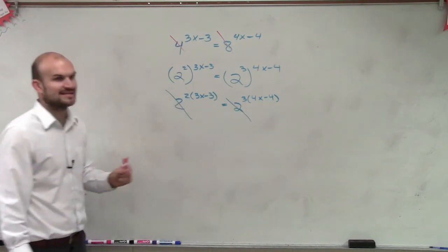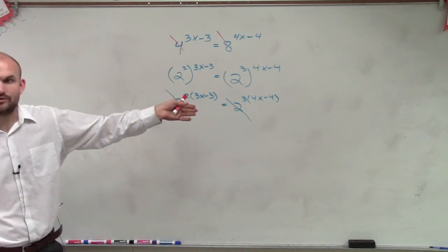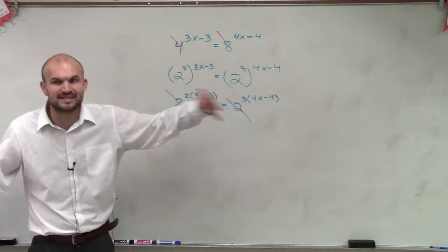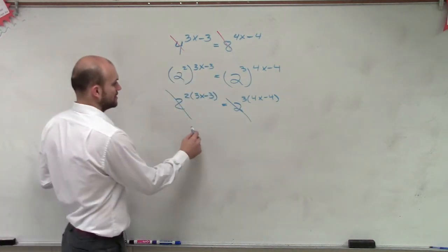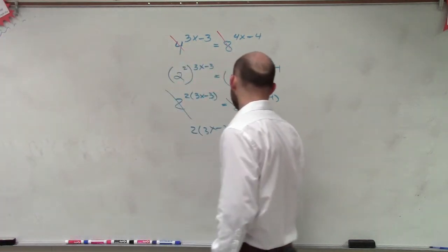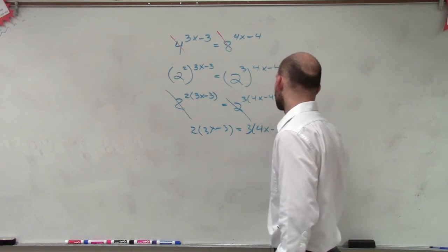Now that my bases are equal to each other, they're not going to affect. Since my bases are equal to each other, I know the exponents have to be equal to each other. So I say 2 times 3x minus 3 equals 3 times 4x minus 4.